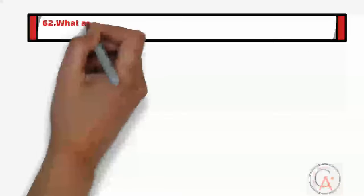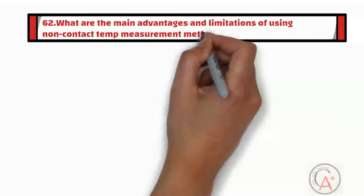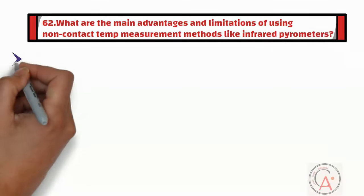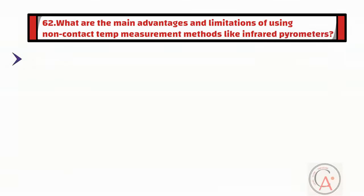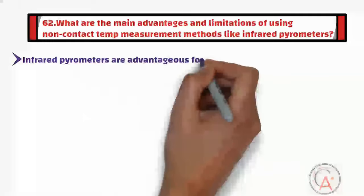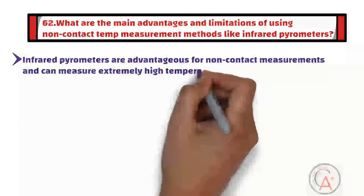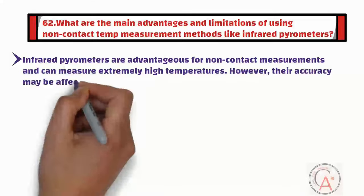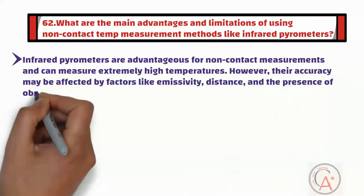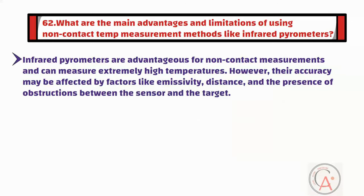Question sixty-two is: what are the main advantages and limitations of using non-contact temperature measurement methods like infrared pyrometers? Infrared pyrometers are advantageous for non-contact measurements and can measure extremely high temperatures. However, their accuracy may be affected by factors like emissivity, distance, and the presence of obstructions between the sensor and the target.